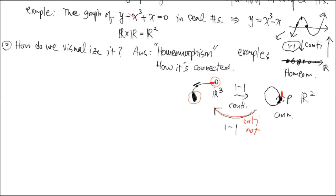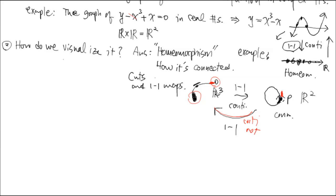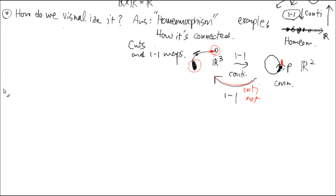So the first question is: how do we visualize this graph sitting inside four-dimensional real space, and how is it connected? We can't do that directly, so we make cuts and use one-to-one maps. You rip apart each individual part so you can send them down to a place where we can see. You make cuts of the original graph and use a one-to-one map down to a place where we can see. Now let's enter the actual complex example.